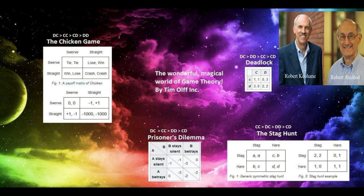In the game of chicken, imagine two cars driving toward each other about to collide. The car that swerves is the cowardly chicken. But the loss of dying is so great compared to the trivial loss of swerving that both cars end up swerving.